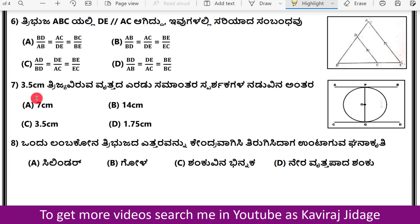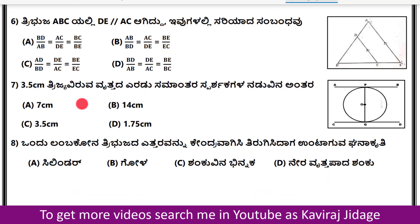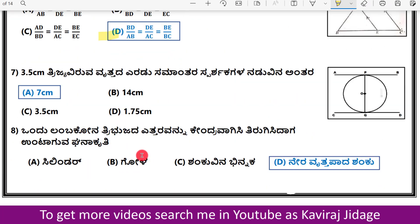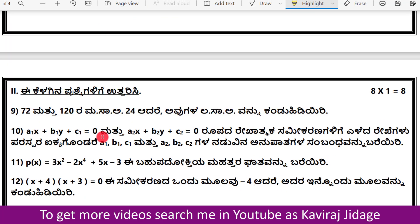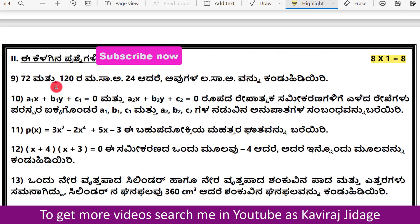The next question involves a right-angled triangle, identifying the centroid. The shape formed is: A — Cylinder, B — Sphere, C — Cone, D — Right circular cone. The correct answer for this question is identified accordingly.